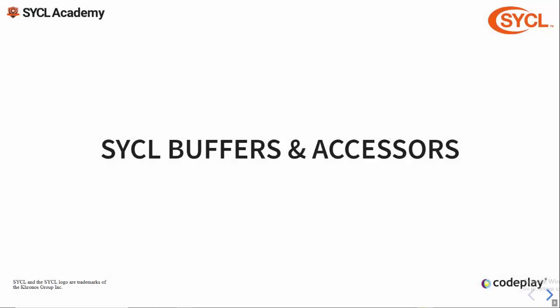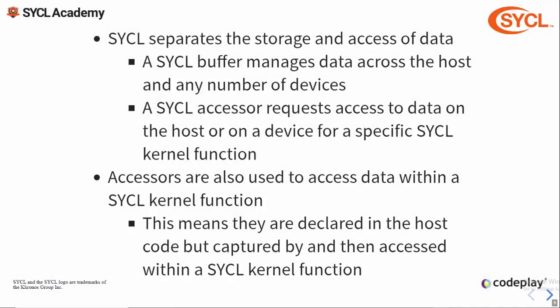Now that we've covered the memory model, we're going to look at how SYCL manages data using buffers and accessors. In SYCL the storage and access of data is separated into buffers and accessors respectively. A buffer manages the data across the host application and one or more devices, with the latest modified copy of the data being available in one of these locations at any given time. An accessor represents a request to access data on a particular device, in a particular memory space, and for a particular kernel function.